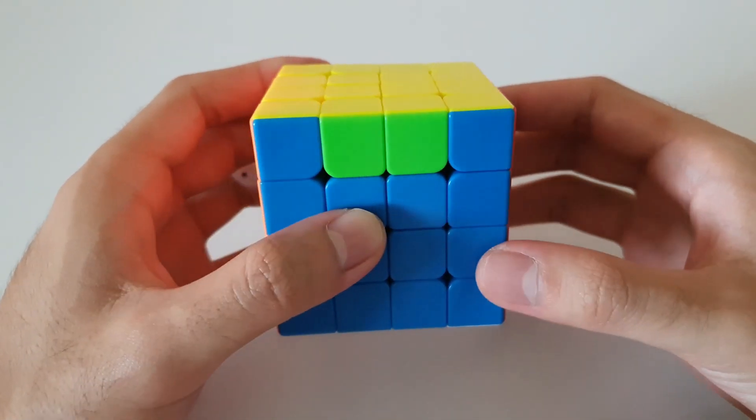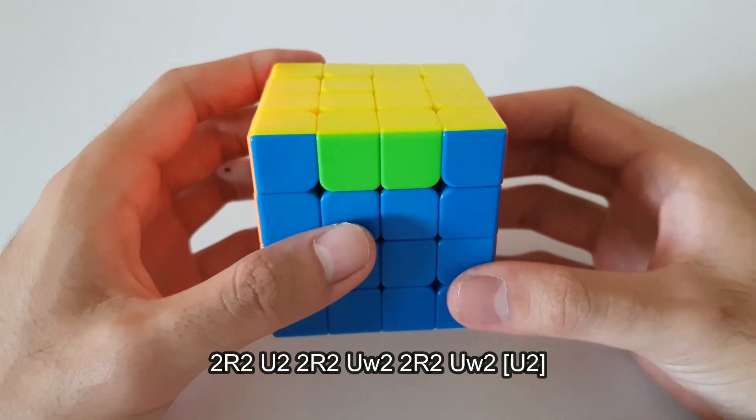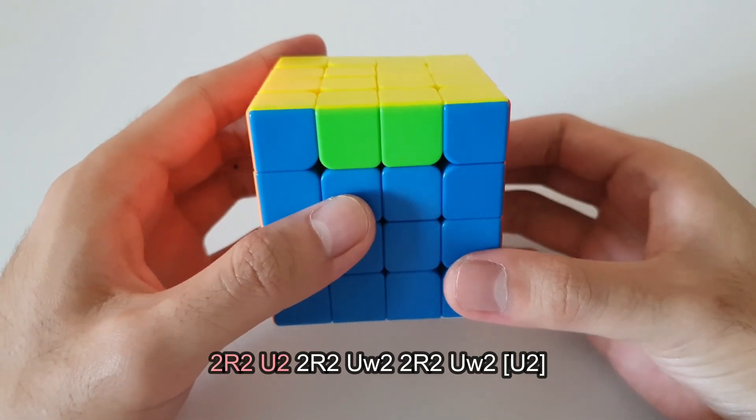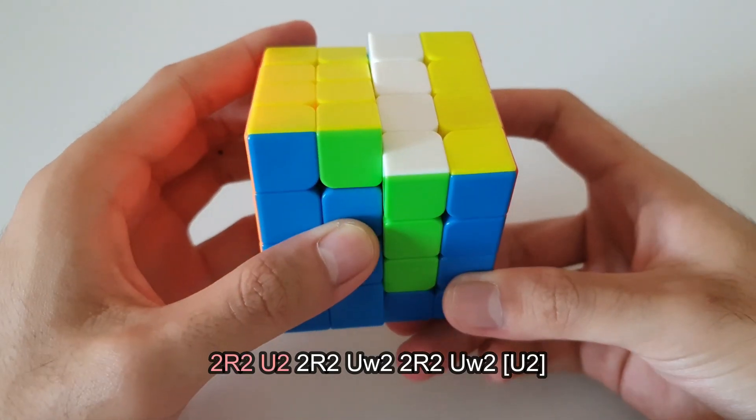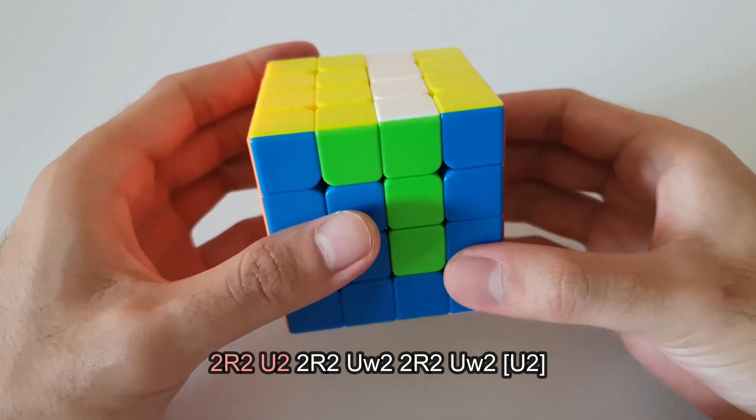So for PLL parity, thankfully, the algorithm is a lot nicer and a lot shorter and easier to remember. And so it goes like this. So it starts off with this 2R2, which is pretty much the slice layer on the right side, twice, followed by U2.